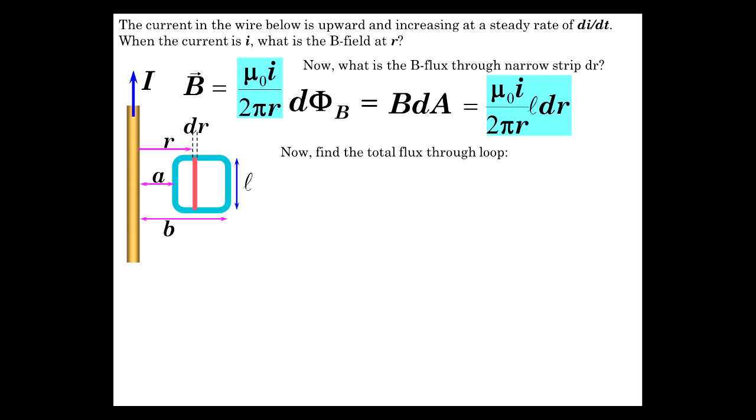Next question. What's the total flux through the loop? Well, now we better be careful because R is changing. So we're probably going to have to integrate, aren't we? Yes, we are. Flux is integral of the dΦ_B's from A to B. Let's do it.